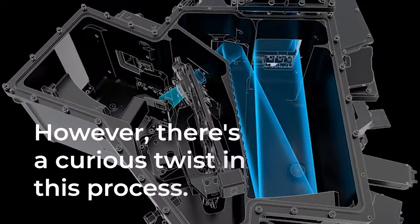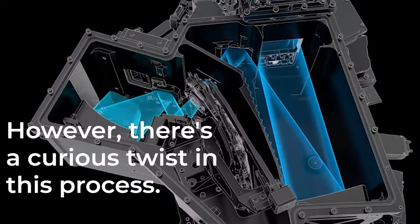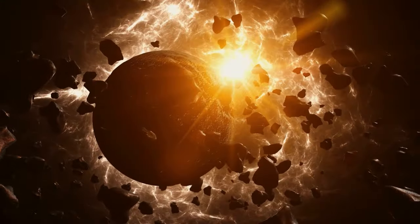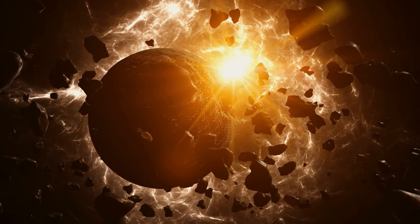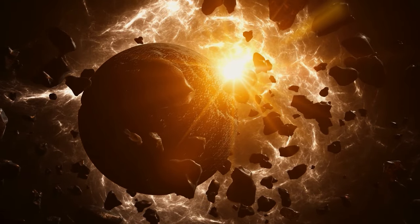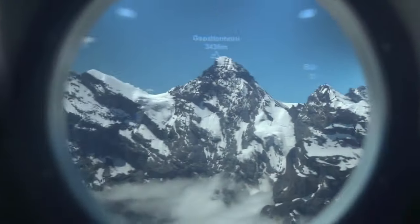However, there's a curious twist in this process. The image formed at this stage appears upside down. It may seem peculiar, but in the context of space, where there's no inherent up or down, this inversion doesn't pose any problems. It's all part of the magic of telescopes.